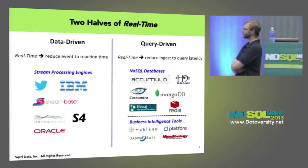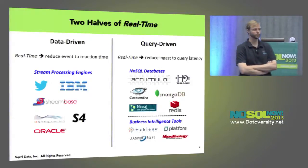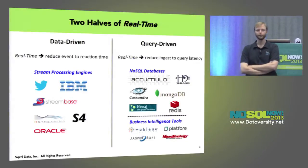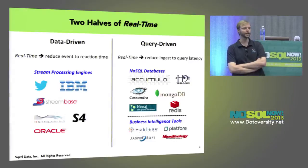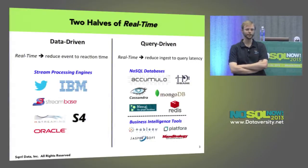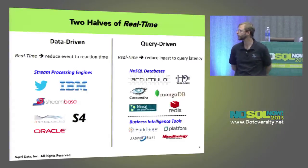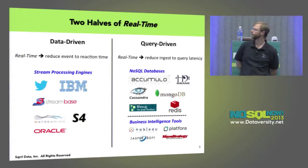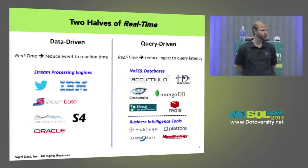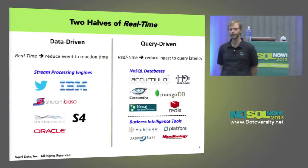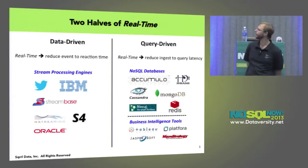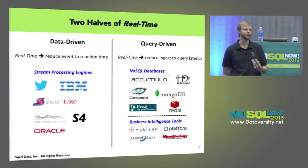So just to derive this definition of real-time, I'm breaking things up into two different halves. On the left you see the data-driven side. In data-driven real-time, real-time generally means you're trying to reduce the time between an event happening and the time that you react to that event happening. This is typically the realm of stream processing engines — things like Storm, Twitter, IBM Infosphere Streams. There are a whole bunch of vendors in that space. Then there's this other half, which is query-driven.